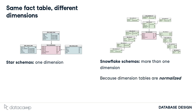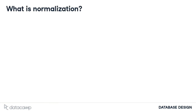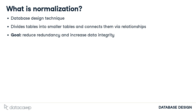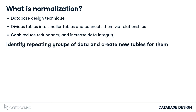This is because the dimension tables are normalized. So what is normalization? Normalization is a technique that divides tables into smaller tables and connects them via relationships. The goal is to reduce redundancy and increase data integrity. There are several forms of normalization which we'll delve into later, but the basic idea is to identify repeating groups of data and create new tables for them.